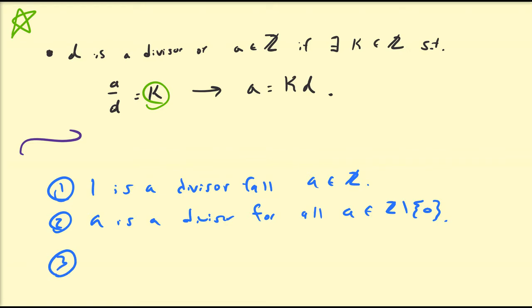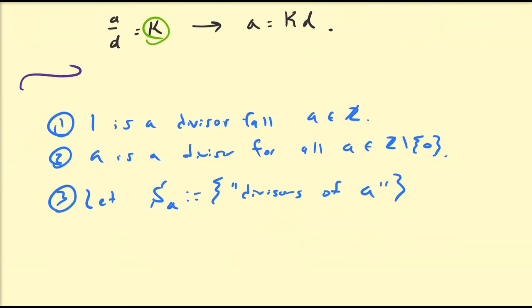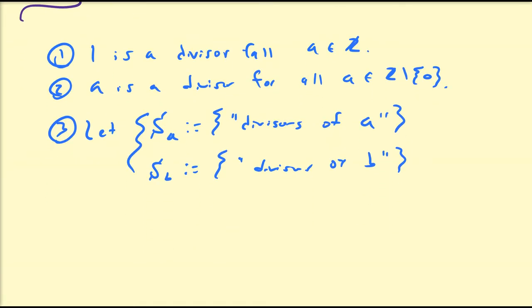For the third property, let us define the set S_A to be equal to the divisors of A. S_A is non-empty because we know that 1 and A are both in this set, and there may be some others between 1 and A. Similarly, let us define the set S_B to be equal to the set of all divisors of B. Both S_A and S_B are non-empty and both of them are finite.